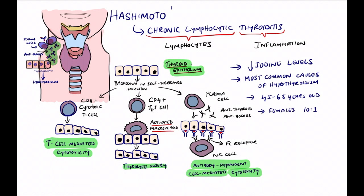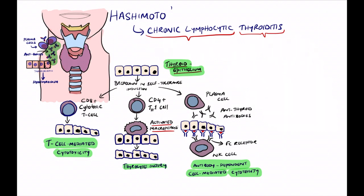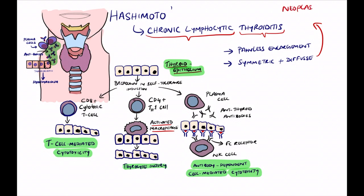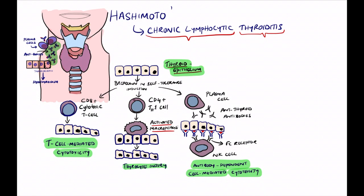On screen you can see the thyroid epithelium with three different mechanisms. First, CD8 cytotoxic T cells cause T cell-mediated cytotoxicity, destroying thyroid cells. Second, CD4+ TH1 cells recognize and activate macrophages, which demolish thyroid tissue causing thyroid injury. Third — the most common — plasma cells produce antithyroid antibodies, which bind to natural killer cells, which then bind to thyroid cells, leading to antibody-dependent cell-mediated cytotoxicity and thyroid injury.